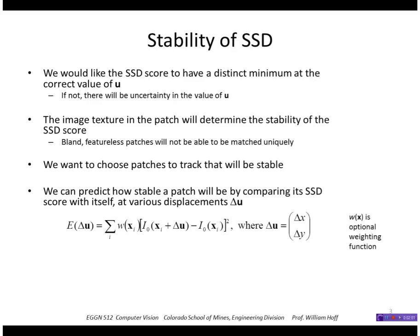We can predict how stable a patch will be by comparing its sum of square differences score with itself at various displacements delta U. So we take the image and displace it by a delta U, and we compare that to the non-displaced image, and we sum that over a window. W here is an optional weighting function, or we can just assume it's a constant.